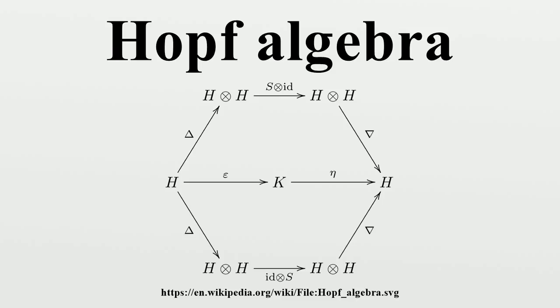One can replace the underlying field K with a commutative ring R in the above definition. The definition of Hopf algebra is self-dual, so if one can define a dual of H, then it is automatically a Hopf algebra.